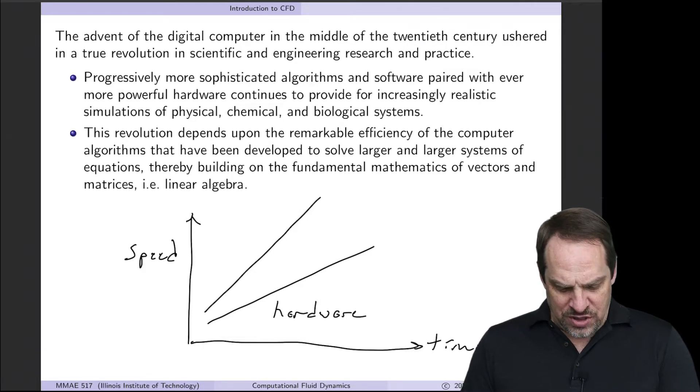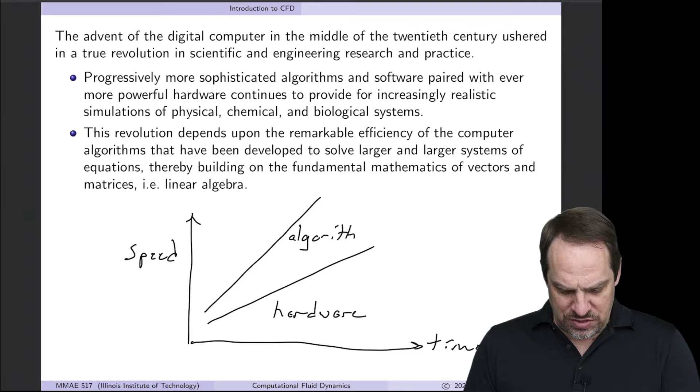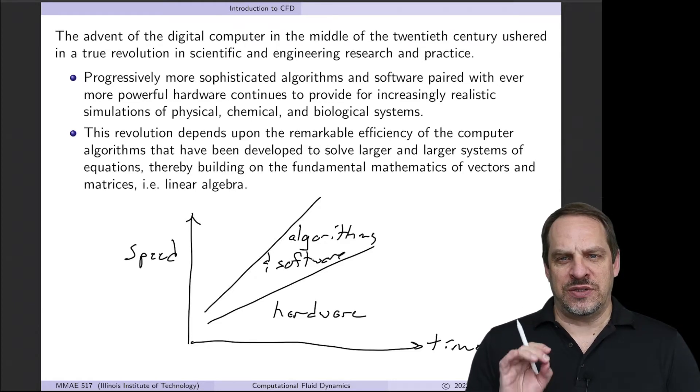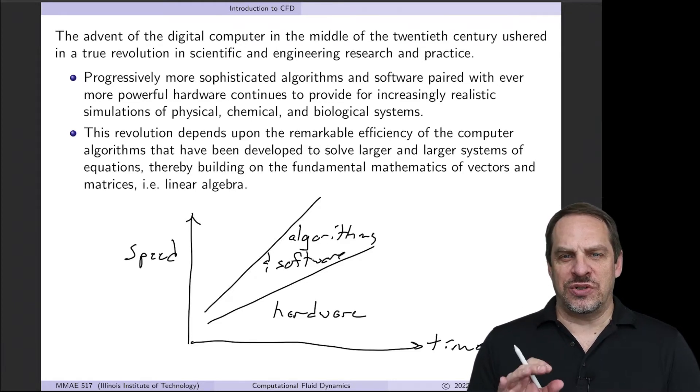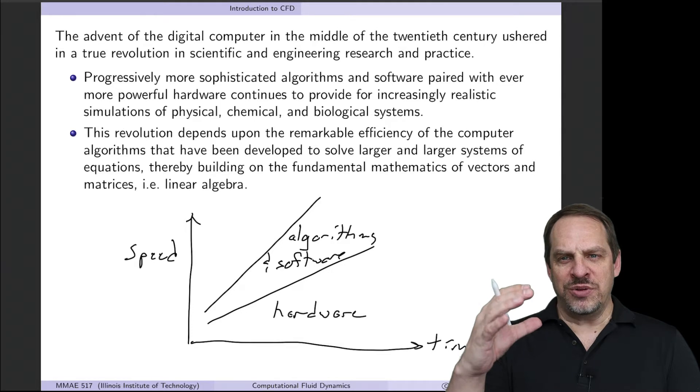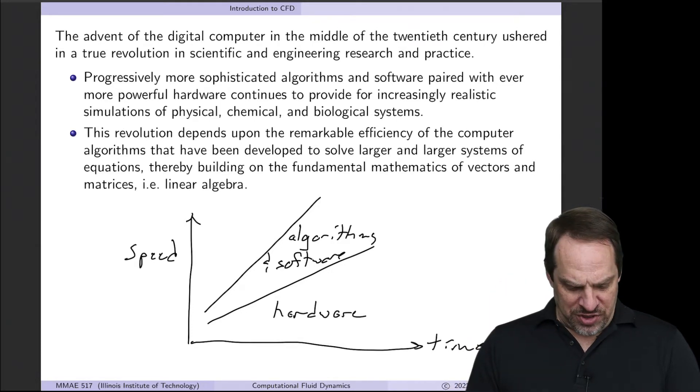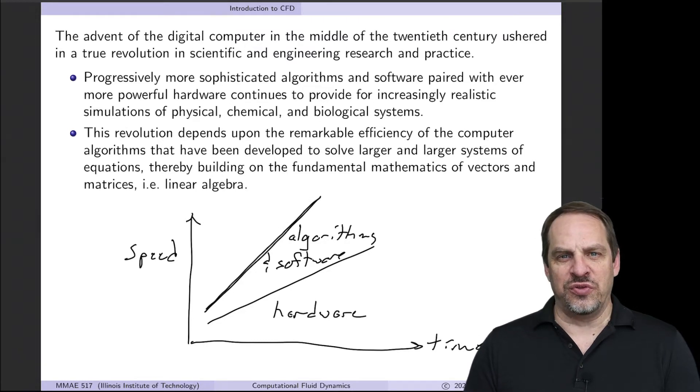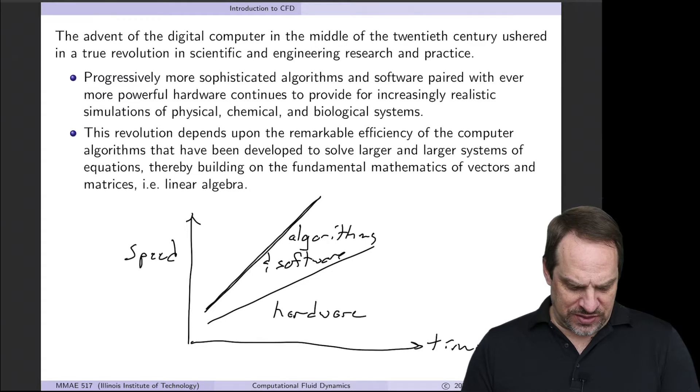In addition to that, there's an additional wave of algorithmic development and software. There's a whole host of scientists, mathematicians, engineers that are developing better and better algorithms for solving these types of problems. So better algorithms on faster computers, we're really riding these two waves of improvement that have revolutionized the computational approach to science and engineering.